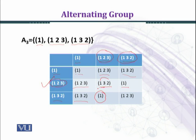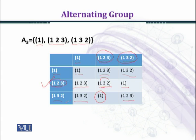Similarly, when we multiply (1 3 2) by (1 2 3) we get the identity permutation, which you can verify at home. Lastly, multiplying (1 3 2) by (1 3 2): 1 goes to 3 then 3 goes to 2, so 1 goes to 2; 2 goes to 1 then 1 goes to 3, so 2 goes to 3; 3 goes to 2 then 2 goes to 1, so 3 goes to 1. This gives the cycle (1 2 3).